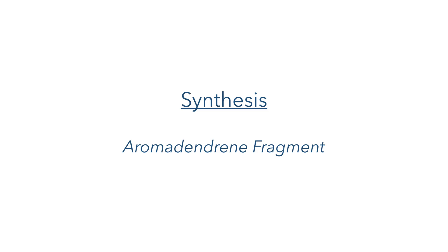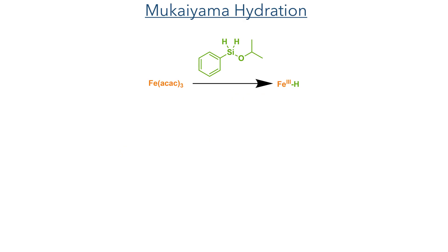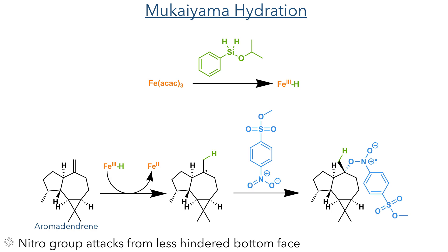So let's look at the synthesis. This begins with the Mukaiyama hydration of aromadendrane. Iron ACAC first reacts with Shenvi's silane, generating an iron-3 hydride complex. This reacts with the double bond of aromadendrane, adding a hydrogen radical to the terminal position, generating a stabilised radical on the tertiary carbon centre. This radical then reacts with methyl-4-nitrobenzene sulfonate,